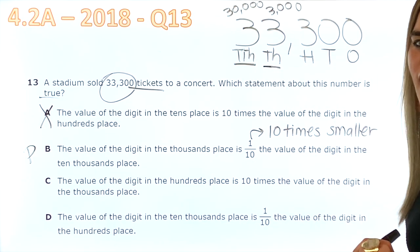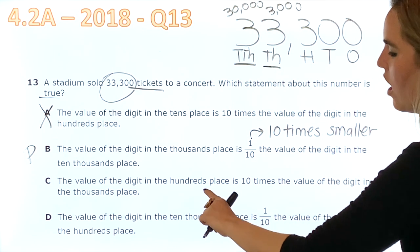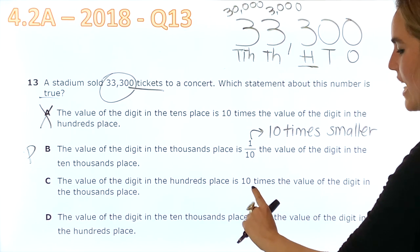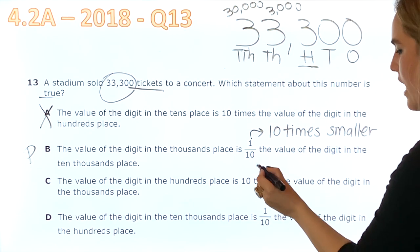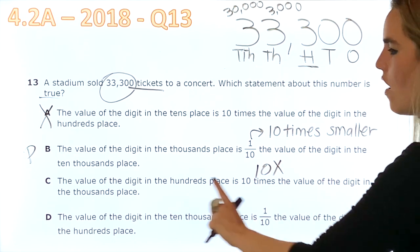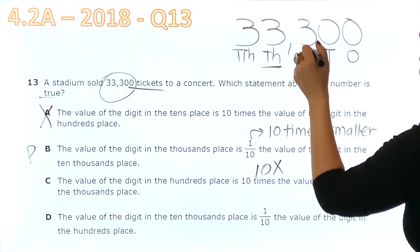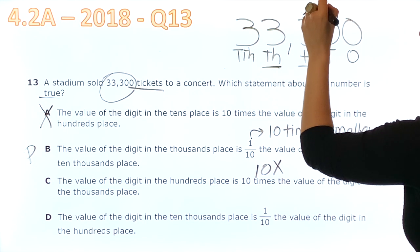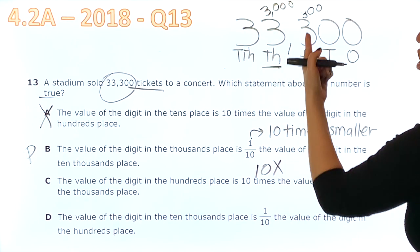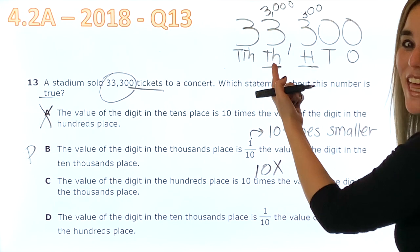Now, let's evaluate C. The value of the digit in the hundreds place. Now, we want to see the hundreds place is 10 times, 10 times bigger. The value of the digit on the thousands place. So, we are comparing